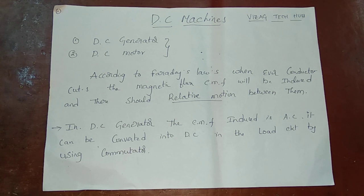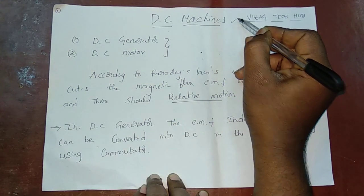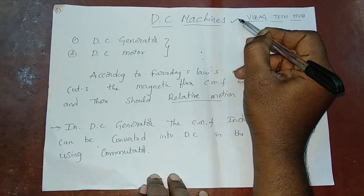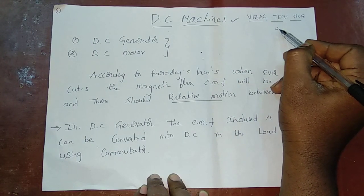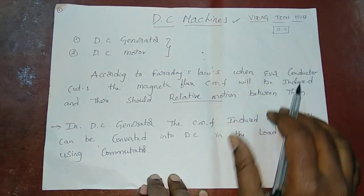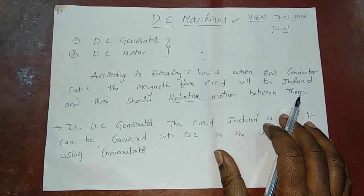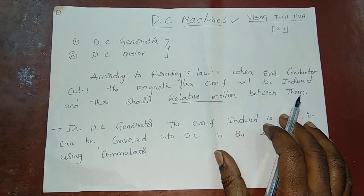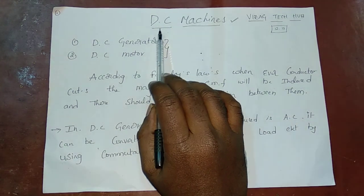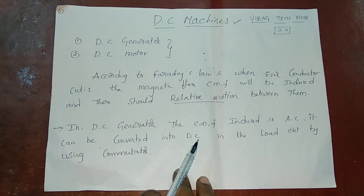Welcome back friends. Welcome to iZ Tech Hub. In the last class, we covered the previous paper about Transformers. In this class, we will talk about DC machines. DC machines means direct current machines.